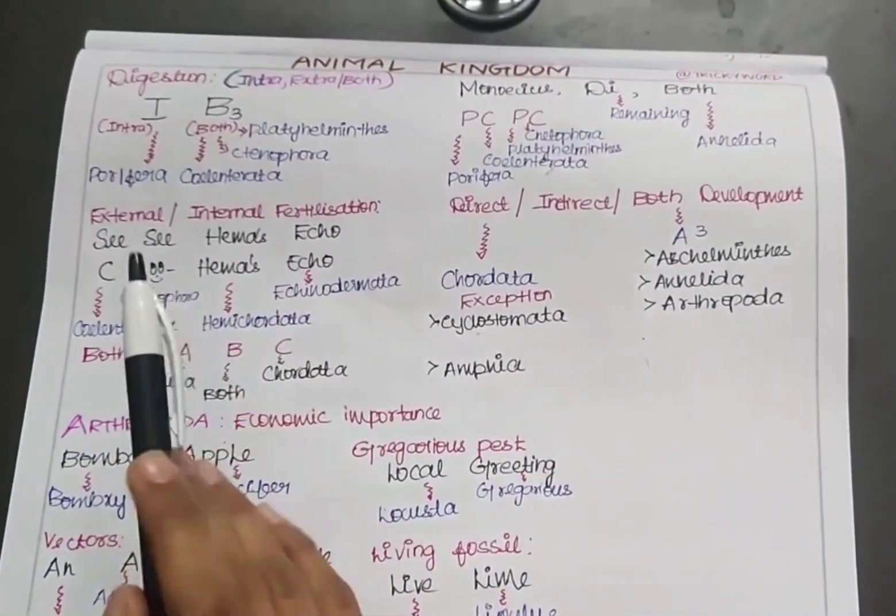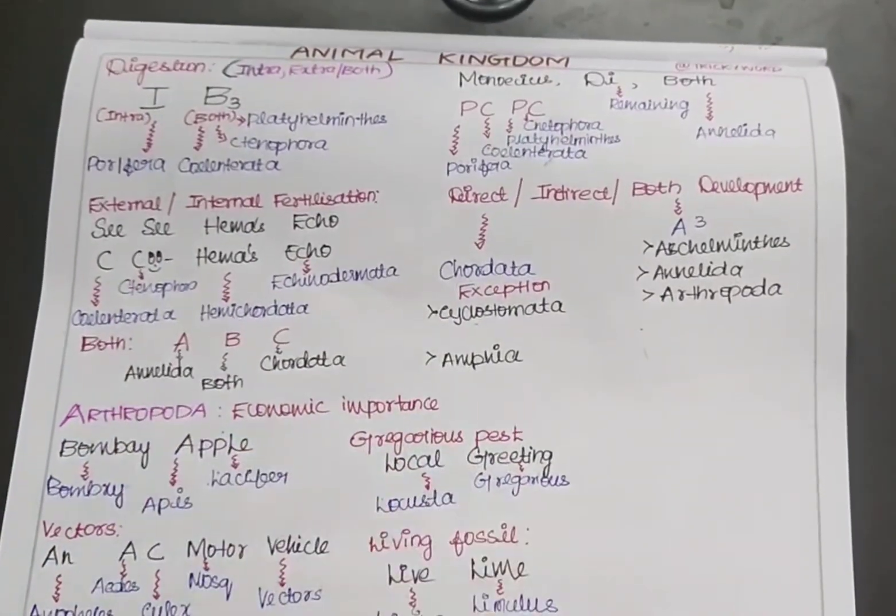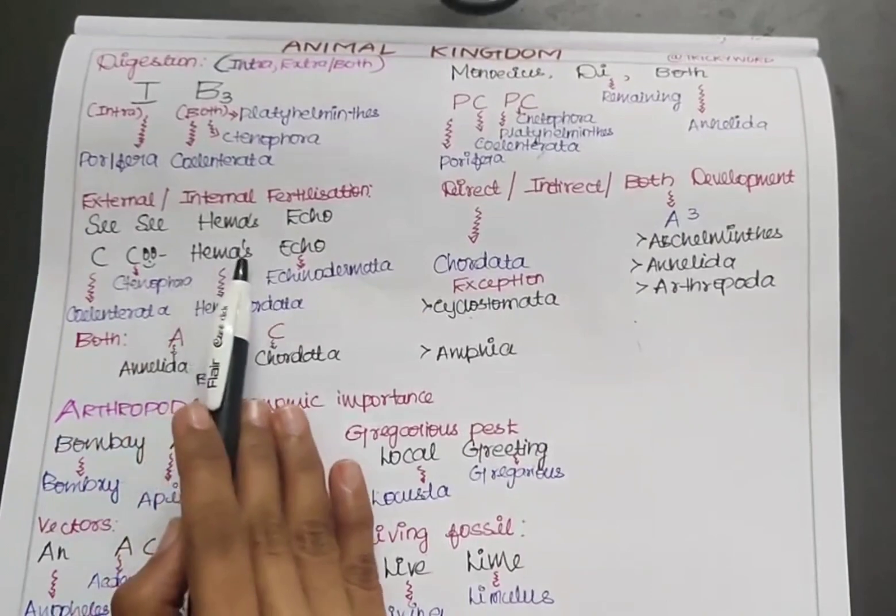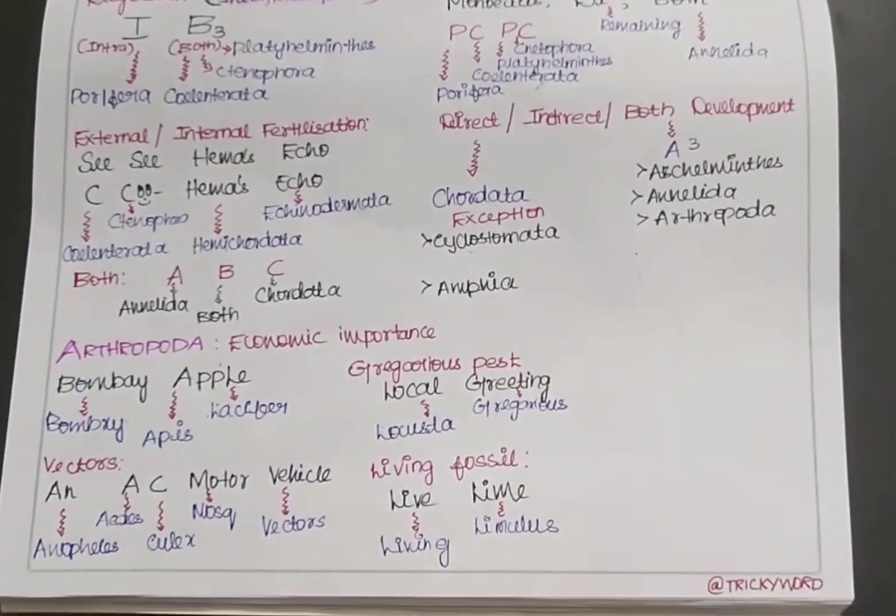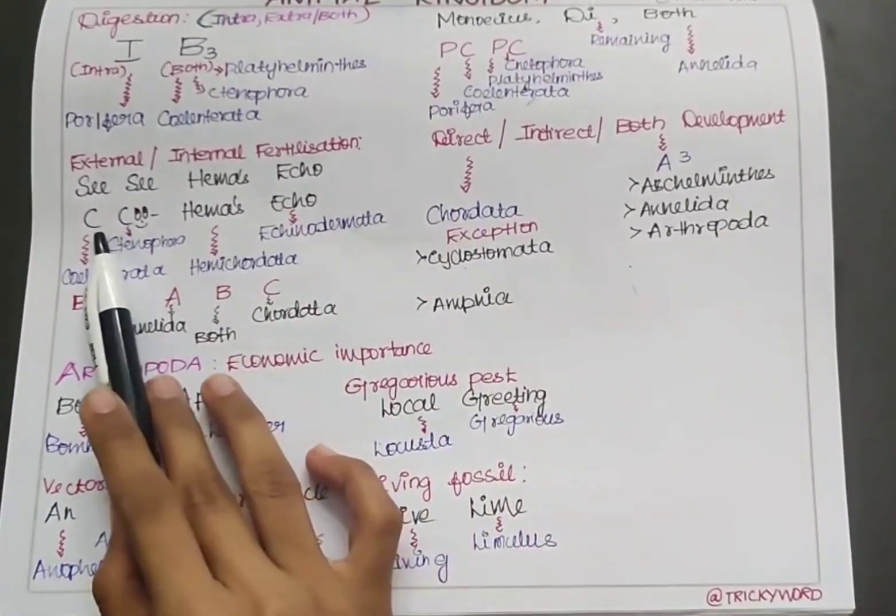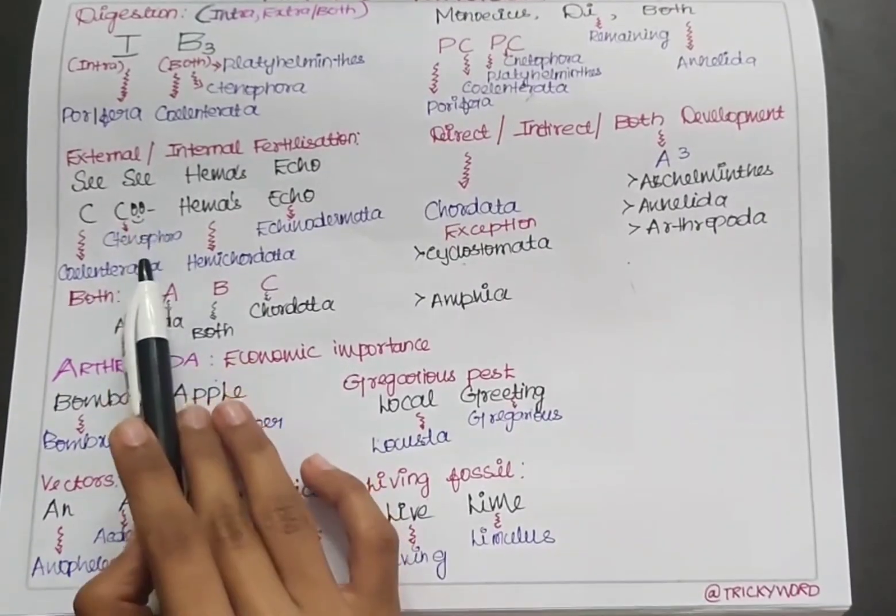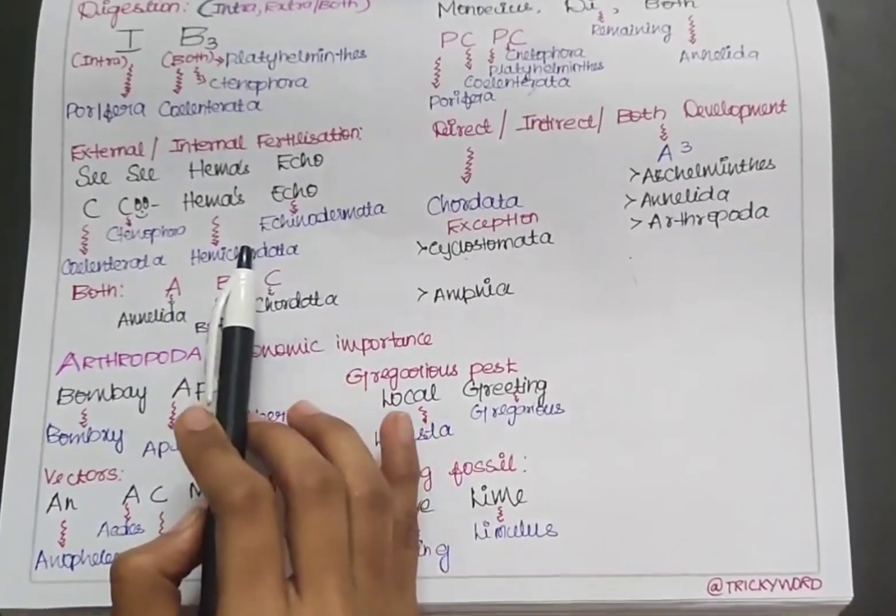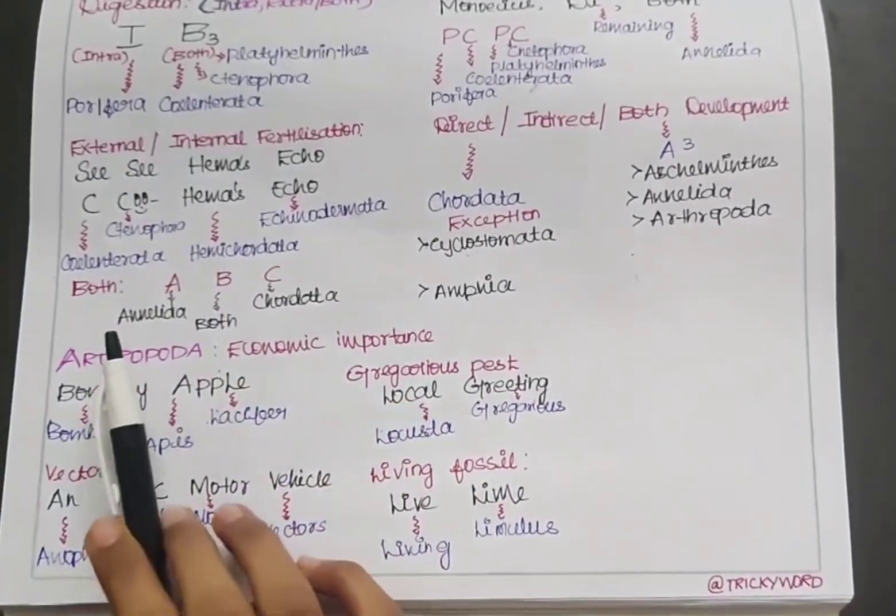Here also, you can think of it as 'seeing'. If you mention C, the examples are easy: CC Hema's Echo. C stands for Cnidaria, another C for Ctenophora, Hema's for Hemichordata, and Echo for Echinodermata.